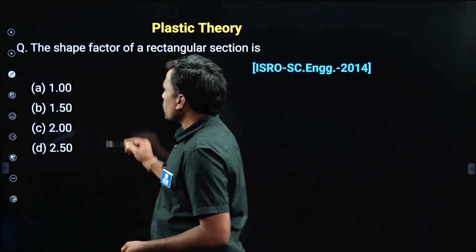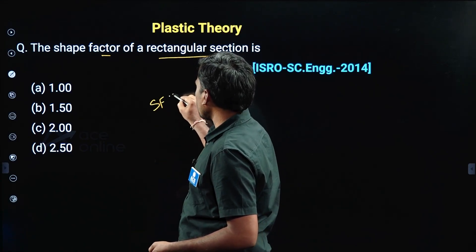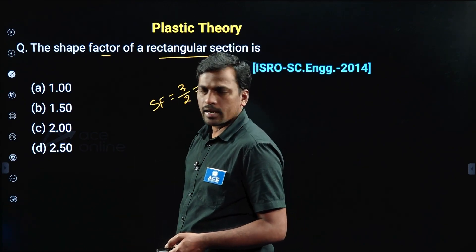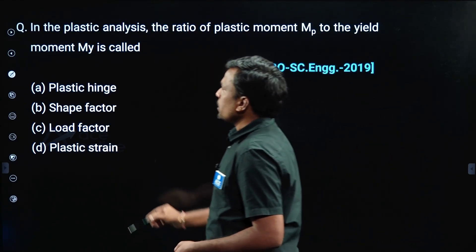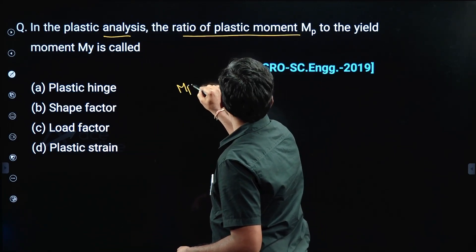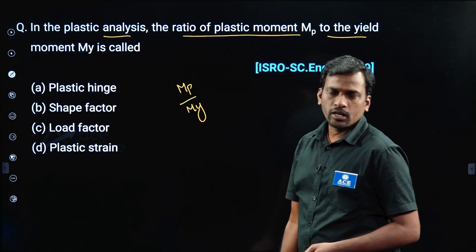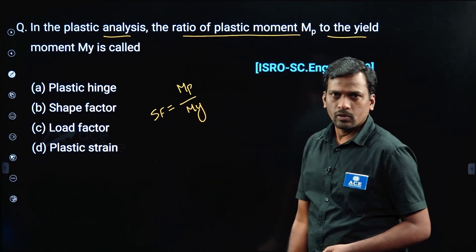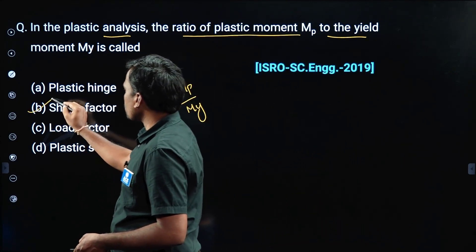Next question from plastic theory. The shape factor for a rectangular section — these are standard values. Shape factor for rectangular section is 3/2, which is 1.5. In plastic analysis, this is the ratio of plastic moment to yield moment — and that ratio is called the shape factor. The definition of shape factor is the ratio of plastic moment to yield moment. Then option B is correct.